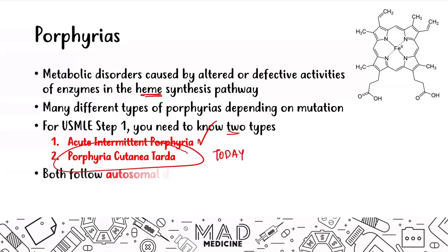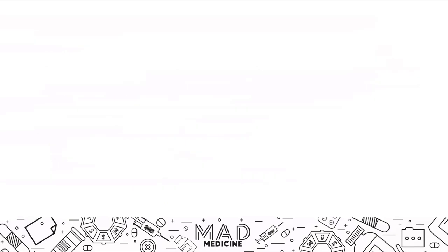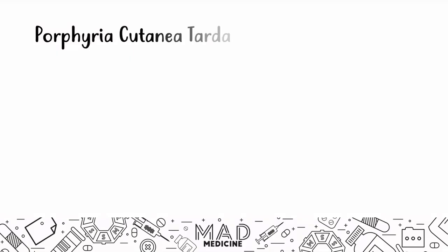Both acute intermittent porphyria and porphyria cutanea tarda are going to follow an autosomal dominant inheritance pattern — keep that in the back of your mind. Porphyria cutanea tarda is the most common porphyria that occurs, and it is associated with hepatitis C.